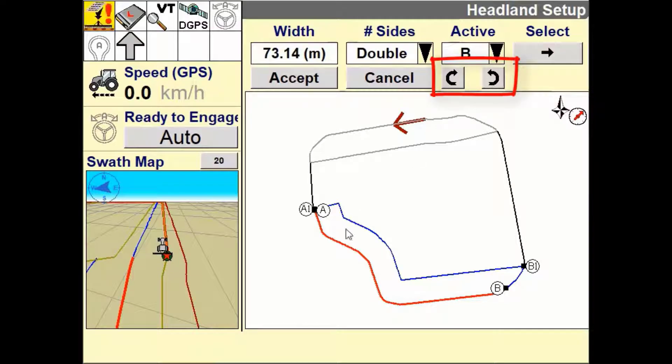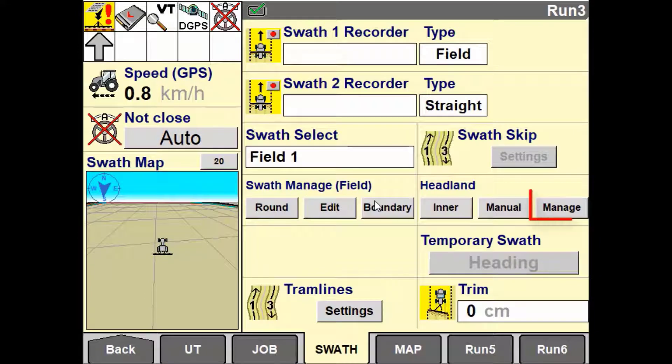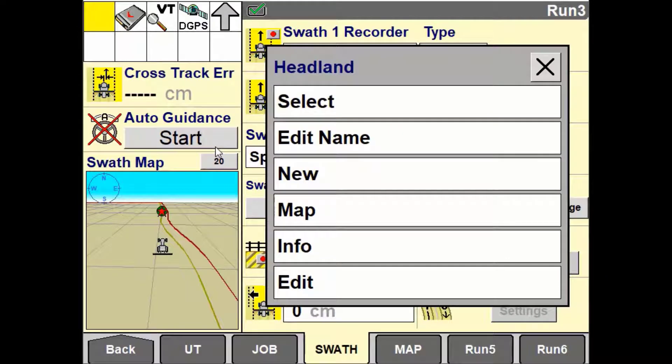The second way is to use the left and right arrows to move this point either clockwise or anti-clockwise along the boundary. Once the headland is created you can use the manage button to edit the name, see information regarding the active headland, edit the current headland pattern or create a new headland altogether.